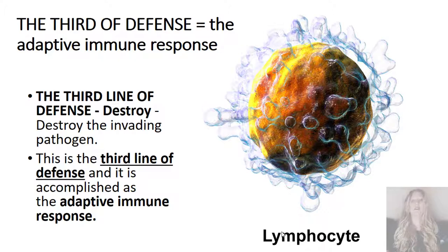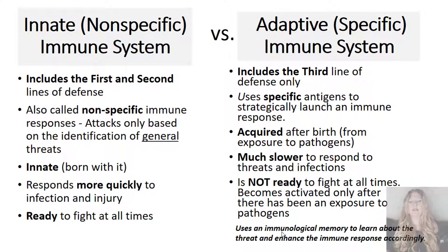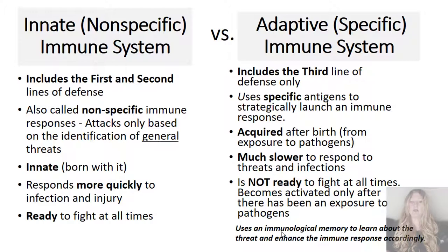The third line of defense is our adaptive immune response. These destroy invading pathogens specifically. Let's look at the difference between the innate or non-specific immune system versus the adaptive or specific immune system. The innate immune system includes the first and second lines of defense, also called non-specific immune responses. In the first and second lines of defense, the defense mechanisms are all based on a general identification of threats, and you're born with them — they're innate, not adaptive. They respond much more quickly than our adaptive immune system.